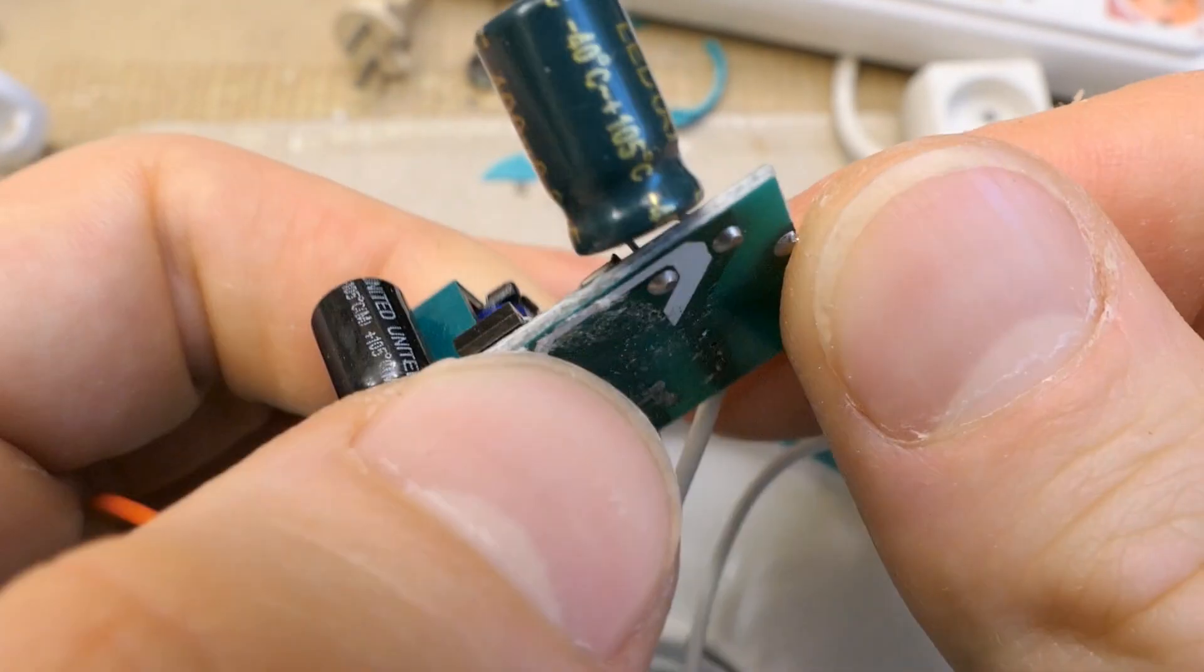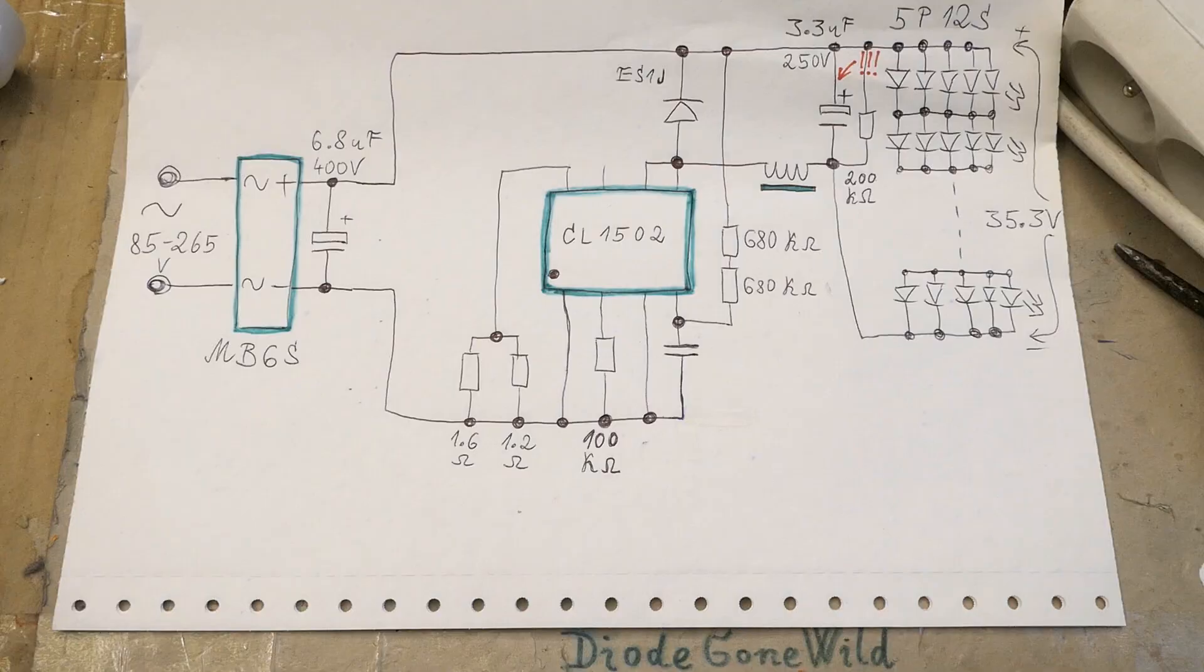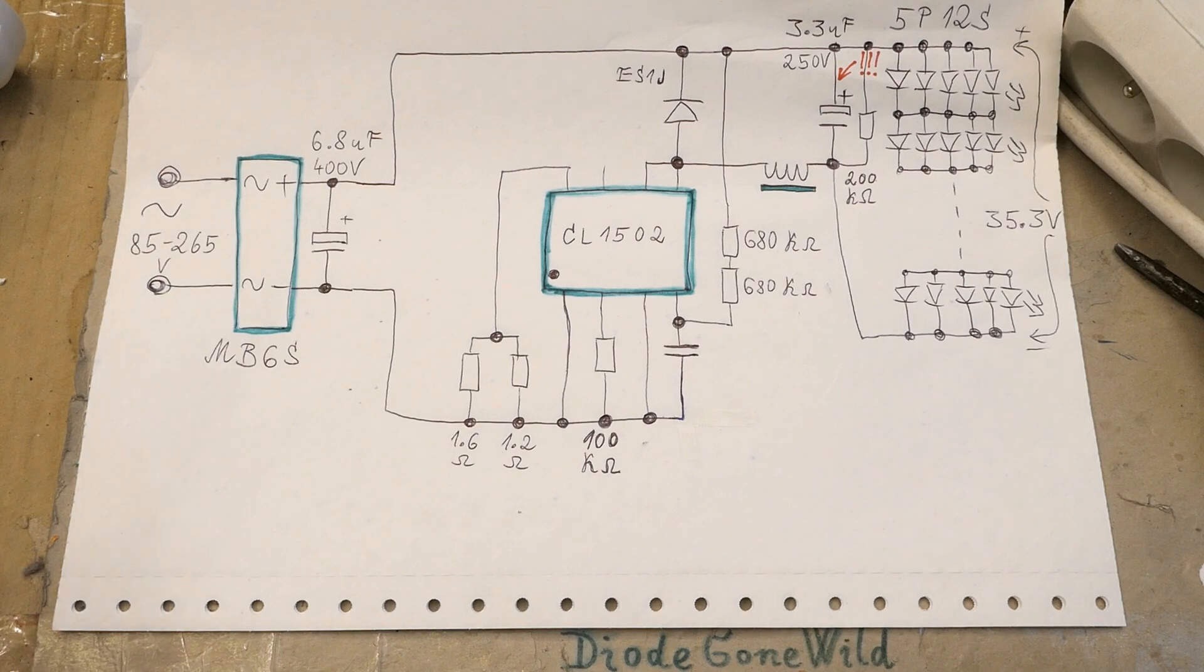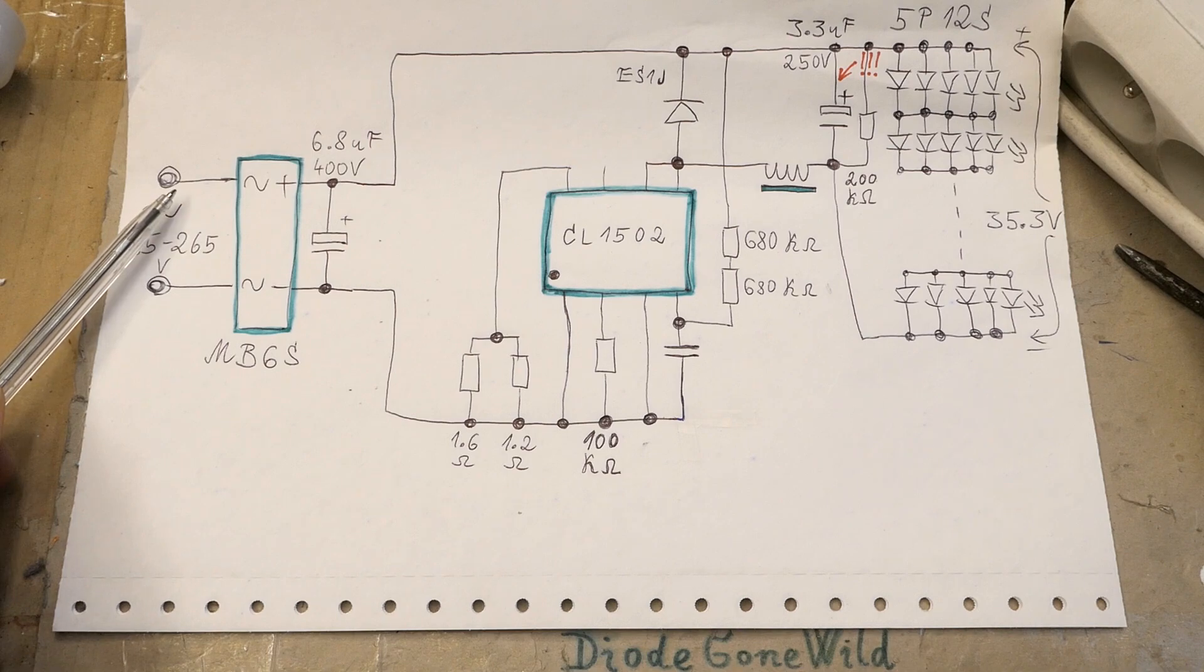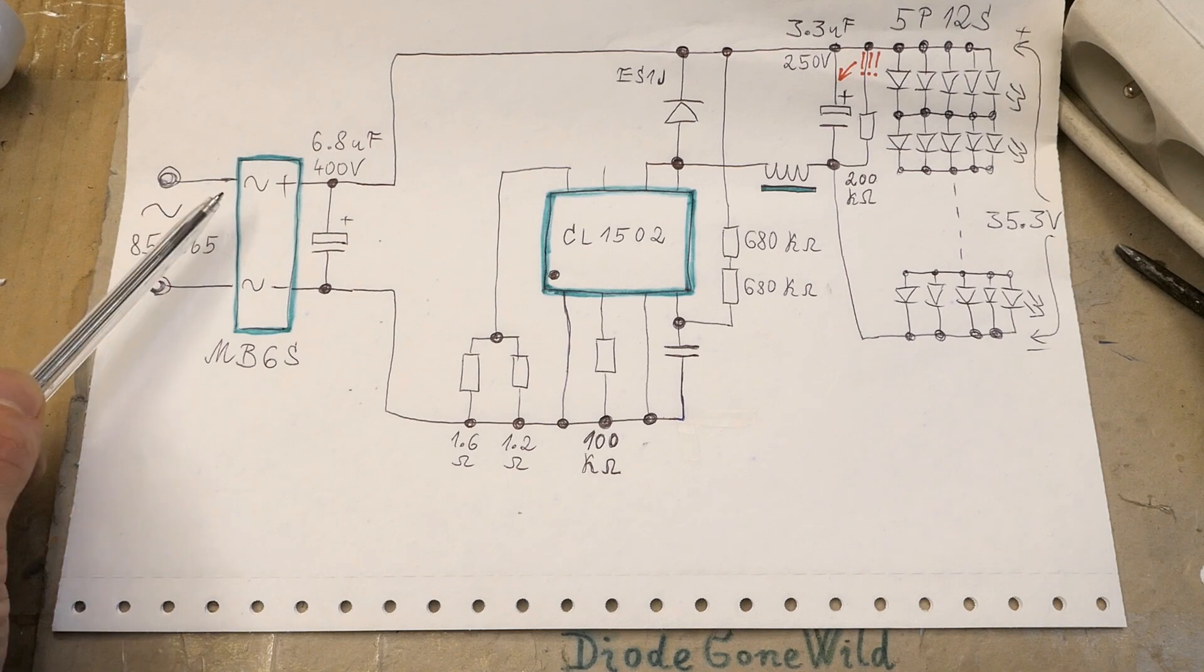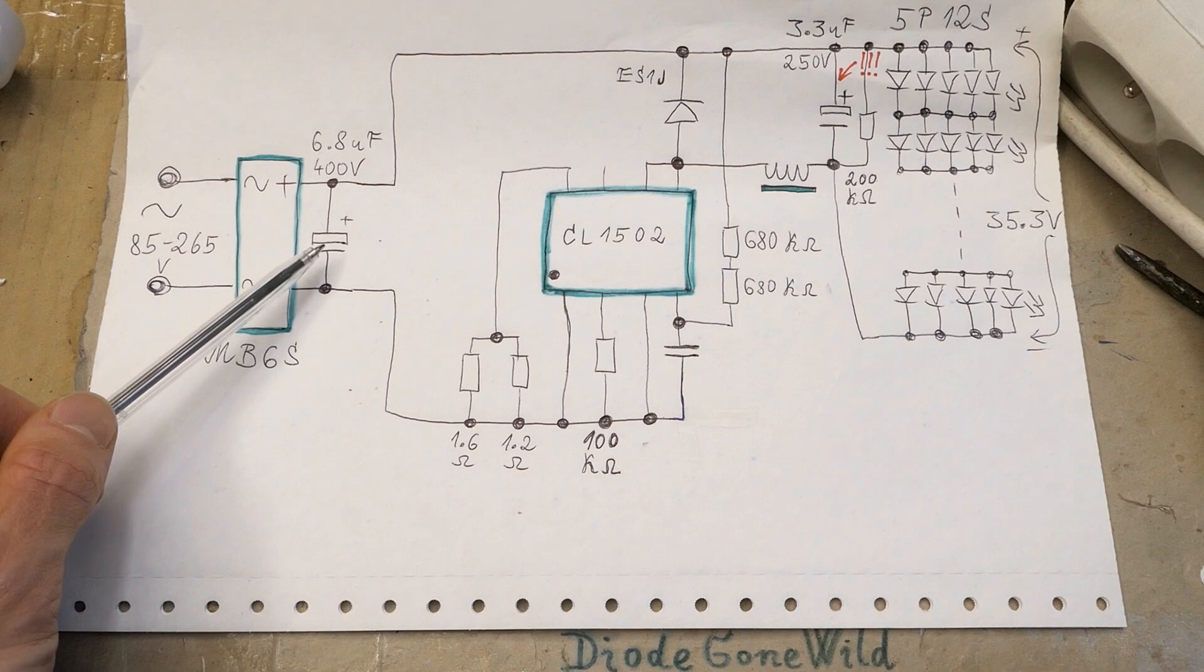But anyway, let's try to draw the schematic of it. And of course here is the schematic of it. And the mains comes in. There is no interference filter. No inrush current limitation. No fuse or fusible resistor. Just a bridge rectifier and smoothing electrolytic capacitor.